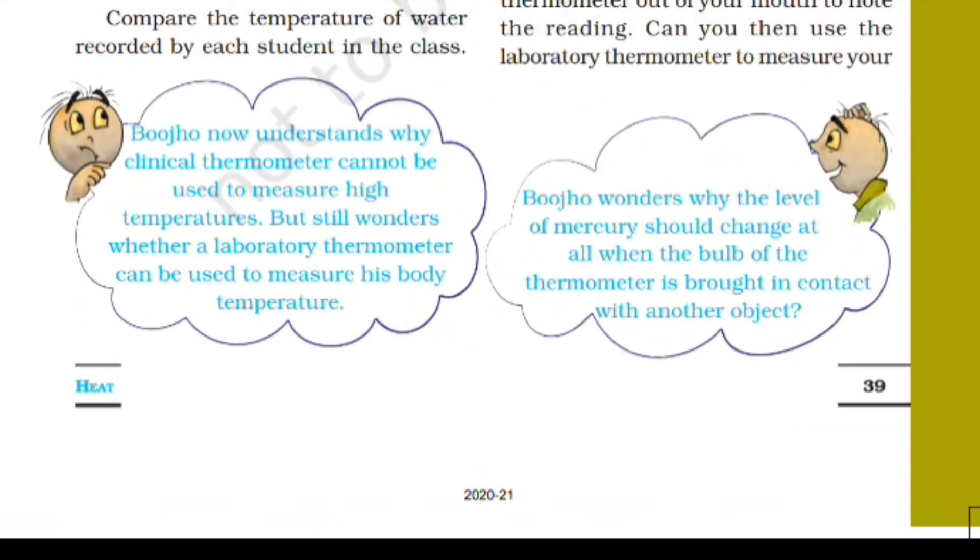Bujo wonders why the level of mercury should change at all when the bulb of the thermometer is brought in contact with another object. When the bulb is brought in contact with another object, then how does it change?